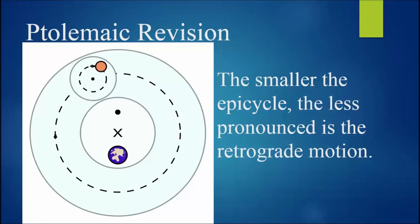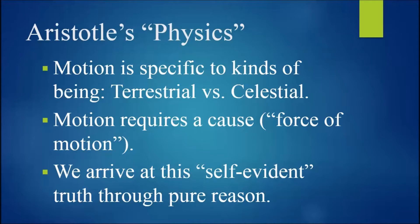So to summarize Aristotle's physics, motion is specific to kinds of being. Eventually, this led to two general classes, terrestrial versus celestial. Motion requires a cause. And we arrive at this self-evident truth through pure reason.